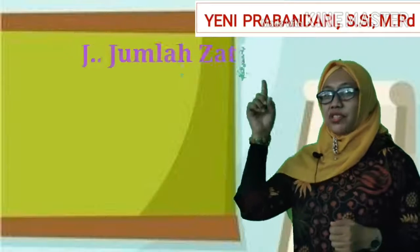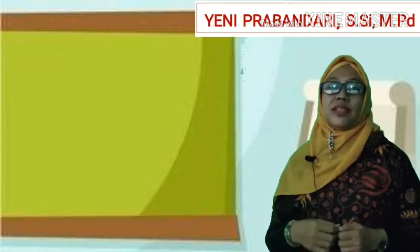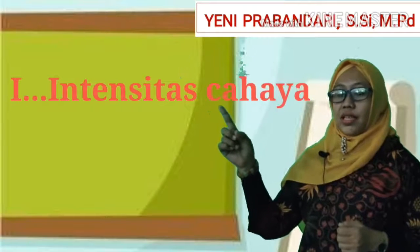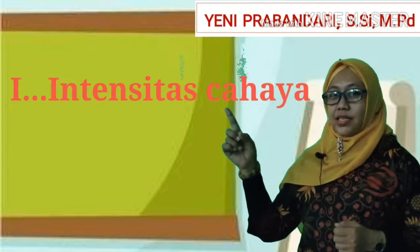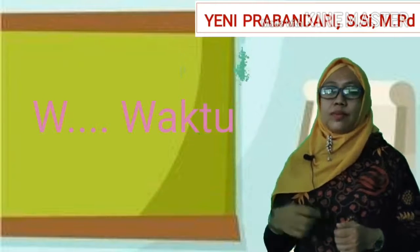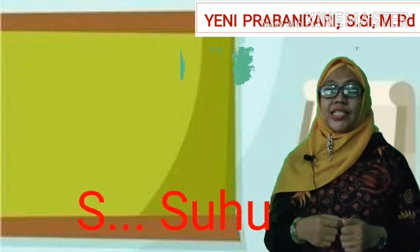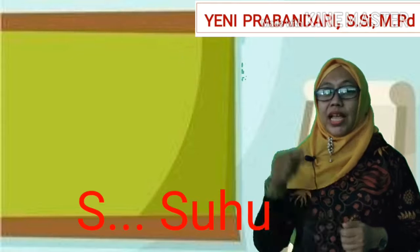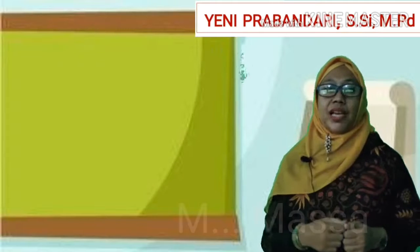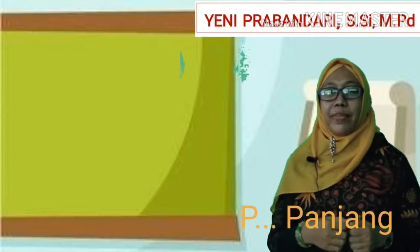J adalah jumlah zat. Huruf yang kedua yaitu I, yaitu intensitas cahaya. Huruf yang ketiga yaitu W, yaitu waktu. Huruf yang keempat adalah A, yaitu arus atau kuat arus listrik. Yang kelima adalah S, S adalah suhu. Lalu yang keenam adalah M, M di sini adalah massa. Yang terakhir yang ketujuh yaitu P, P itu adalah panjang.